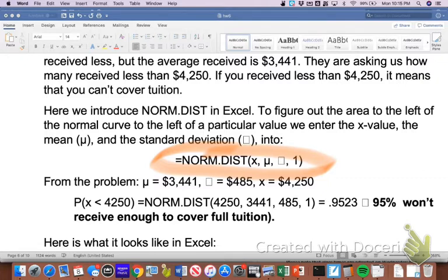You're going to replace the X with that $4,250, so that the amount that we're interested in, that we're trying to figure out how many made beneath that. We are going to replace the mean with the average scholarship, so that $3,441.